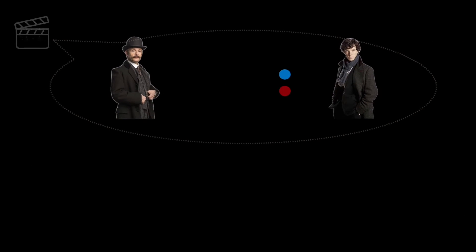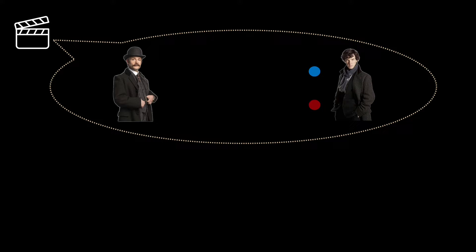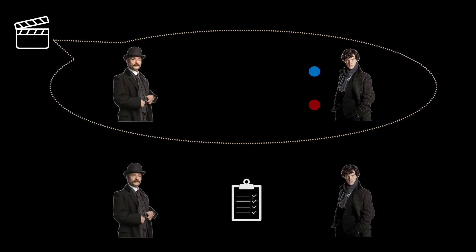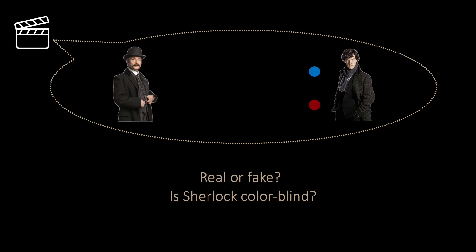The movie cannot convince you that Sherlock can distinguish the colors because Watson and Sherlock can create the same movie even if Sherlock is colorblind. How can they do that? Sherlock and Watson can first decide in what order to switch the spheres. After they have agreed on the order, they start recording the movie. You can never tell whether it was a genuine recording where Sherlock was proving to Watson that he could distinguish the colors, or whether they agreed on the order beforehand. So, our protocol also fulfills this strong requirement.